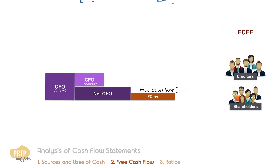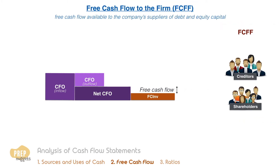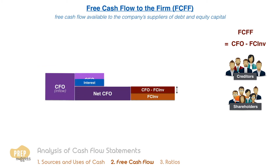FCFF is the free cash flow available to the company's suppliers of debt and equity capital. Pictorially, it should be the area here, which is the difference between CFO and the fixed capital investment. However, under US GAAP or under some instances of IFRS, interest that is paid out to debt holders is included under CFO outflows.